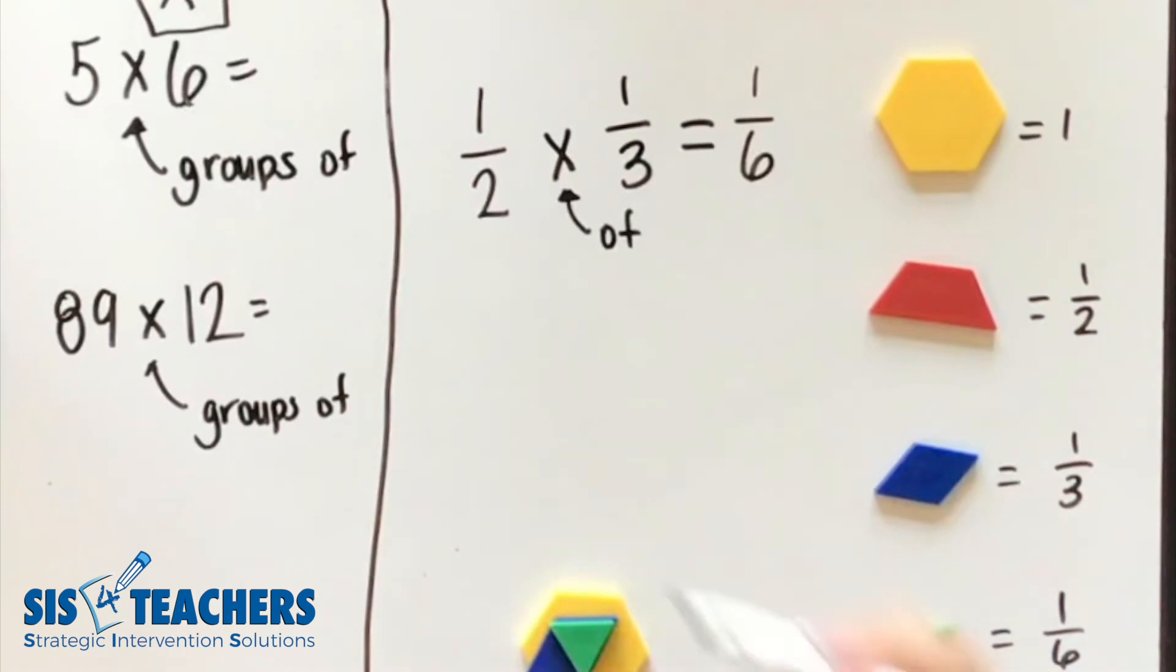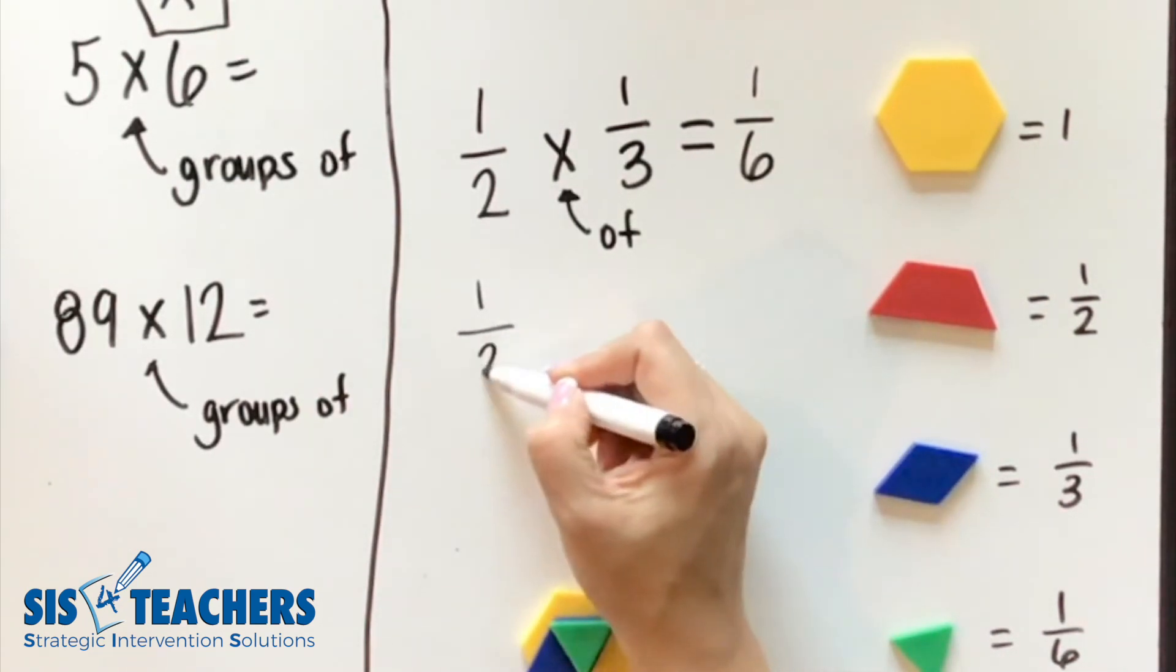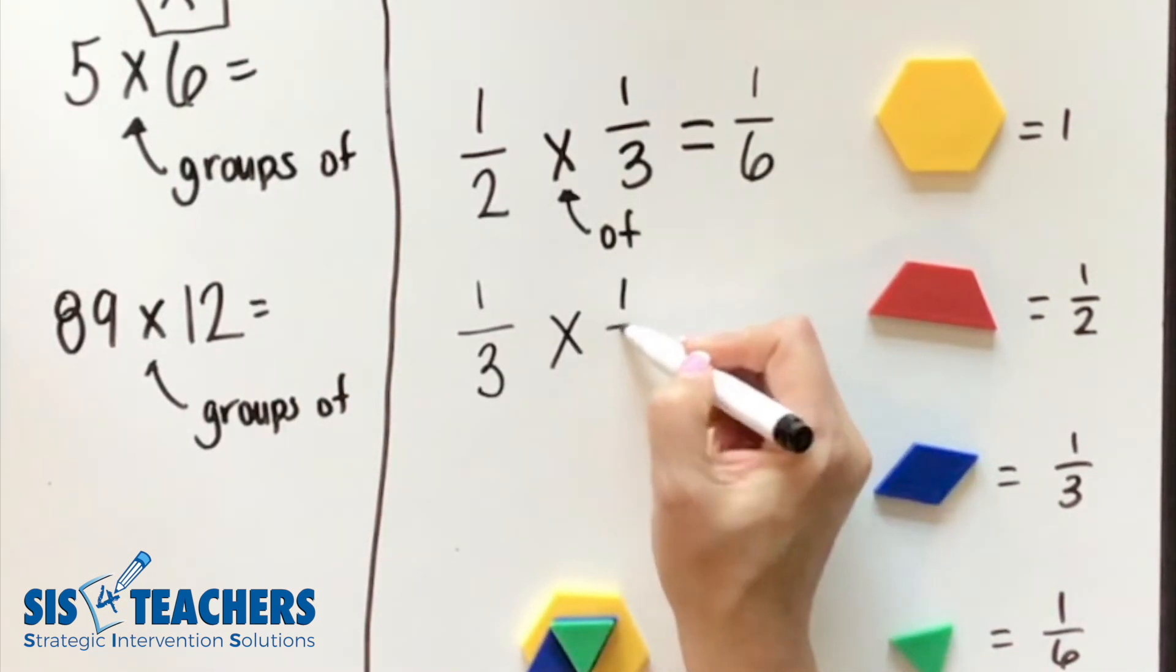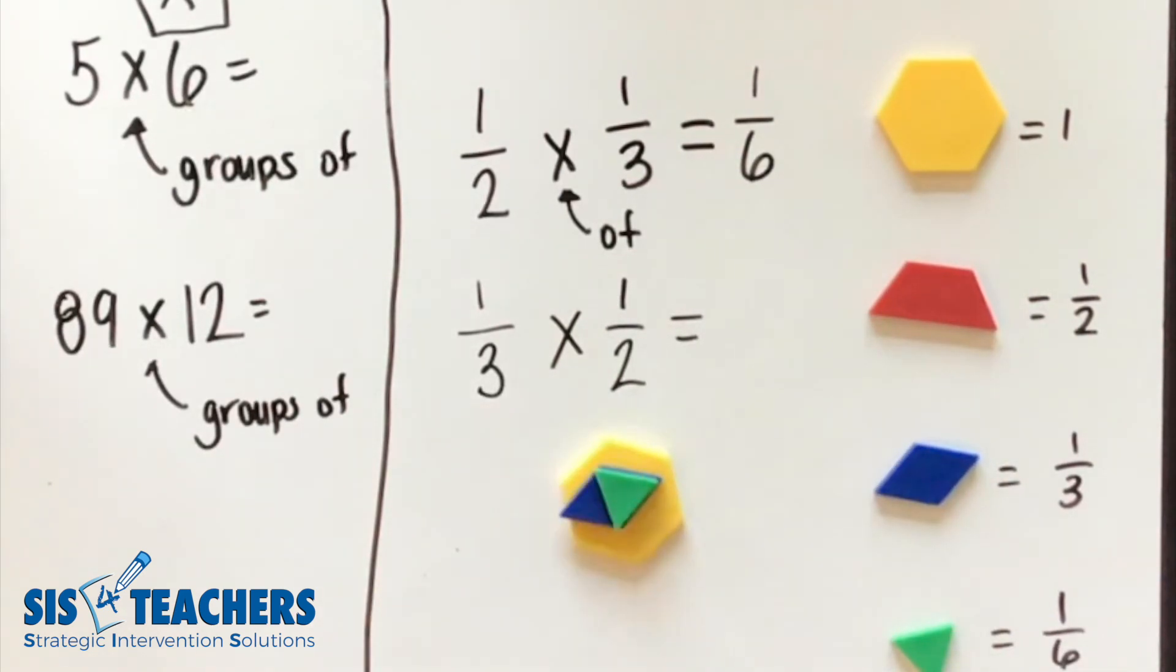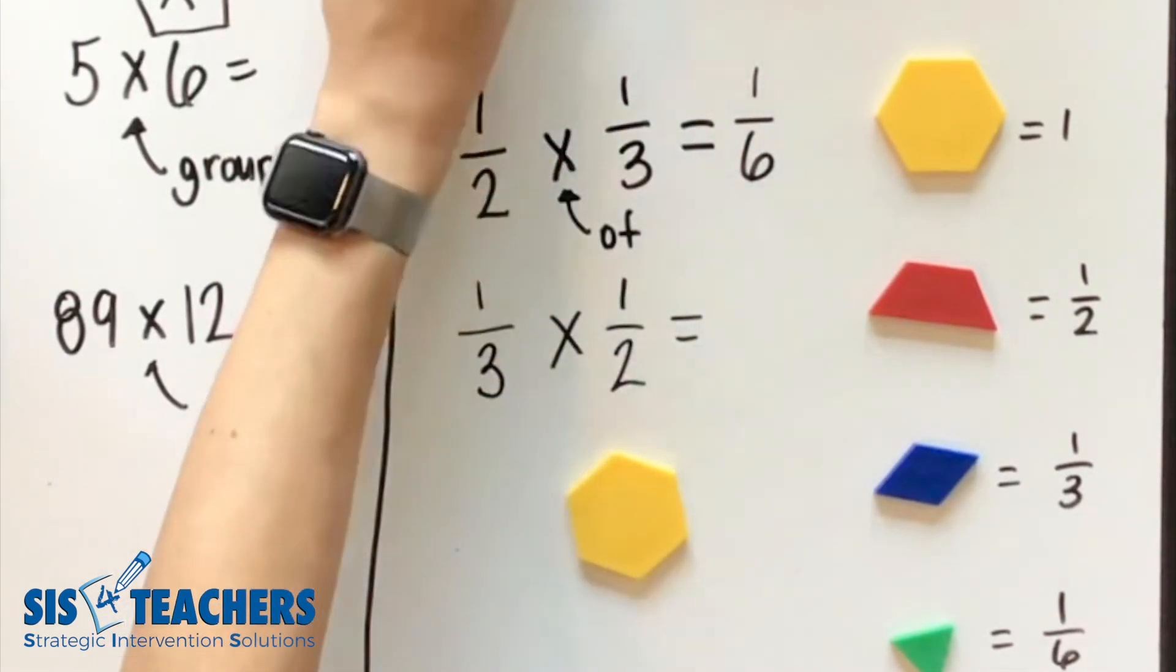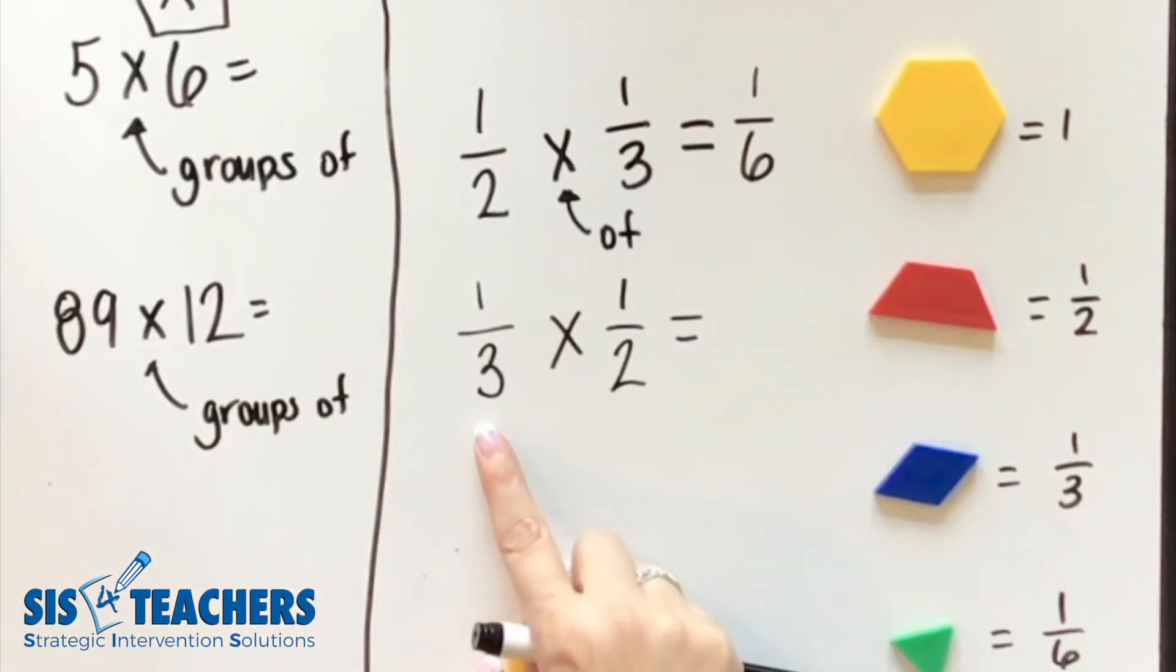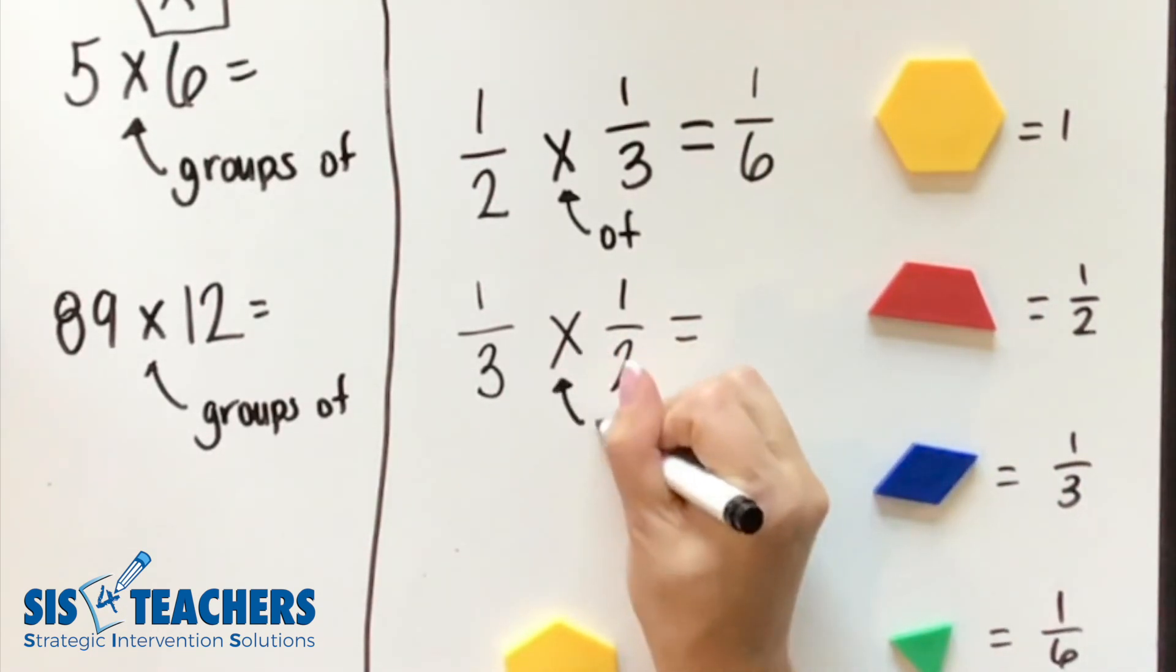What happens if I were to use the commutative property and show this the other way? Does it have the same shapes? Will it look the same to explain it? The answer is no, because we're now talking about one third of half. So am I going to pull out my half, or am I going to pull out my one third?